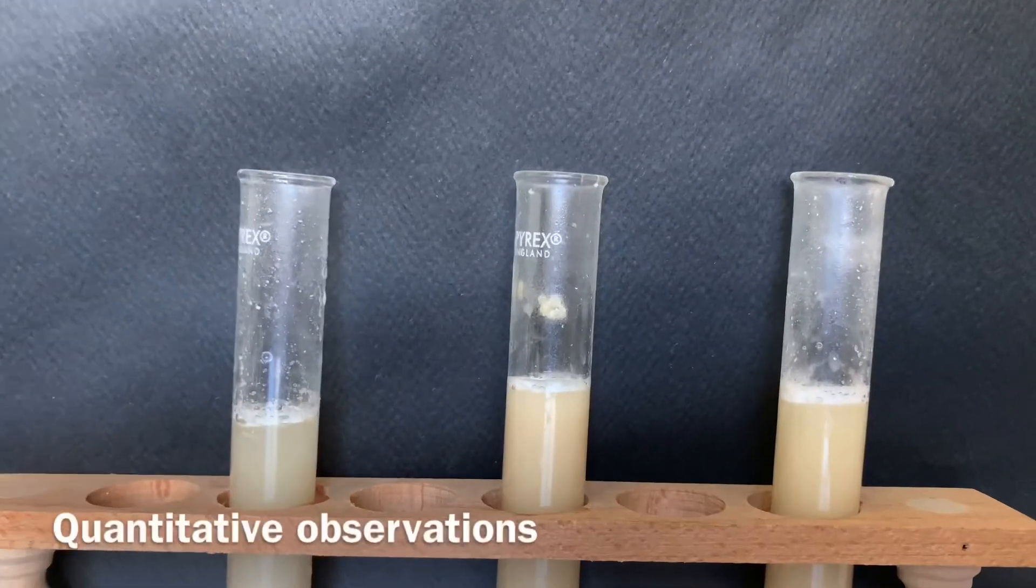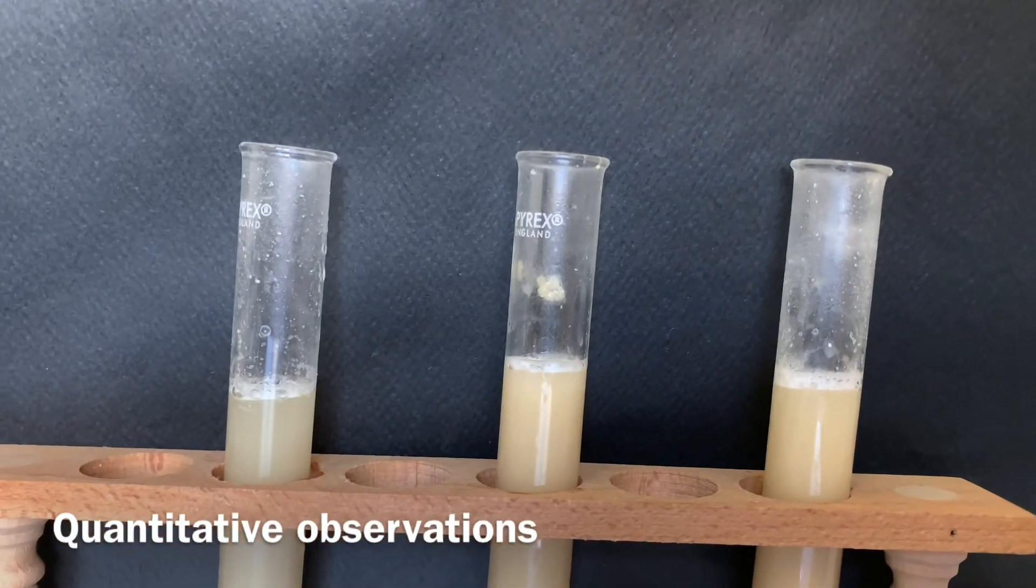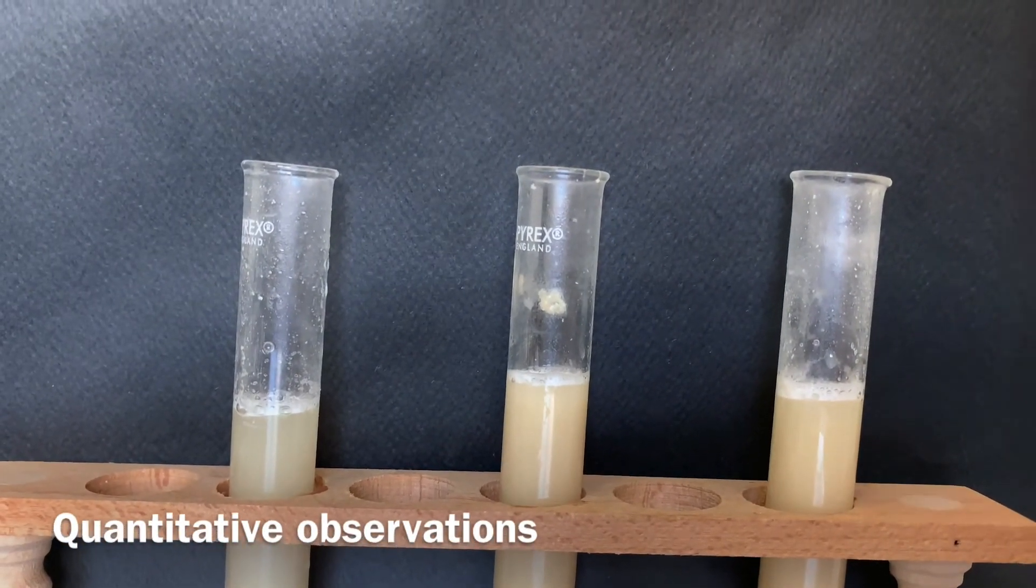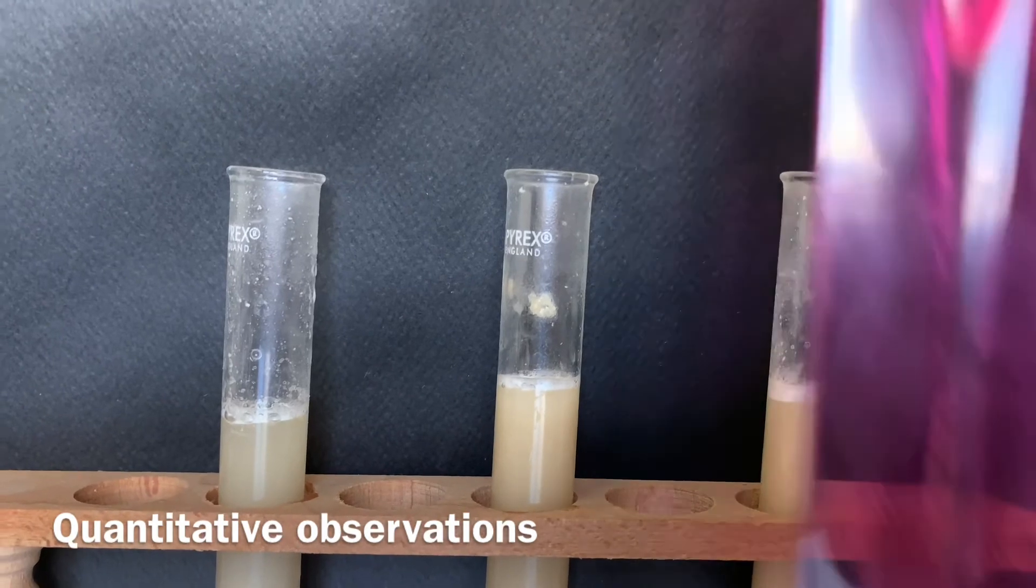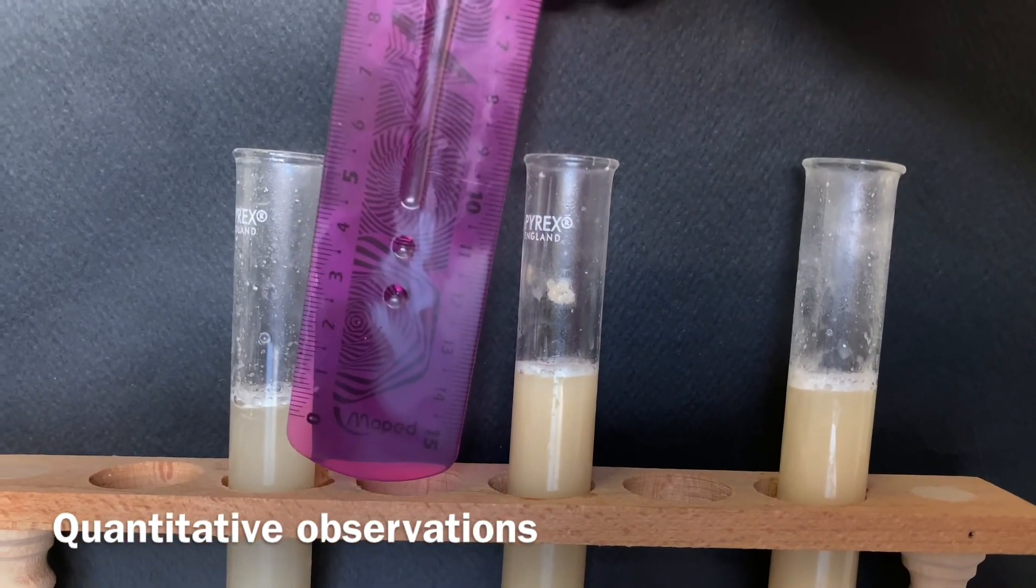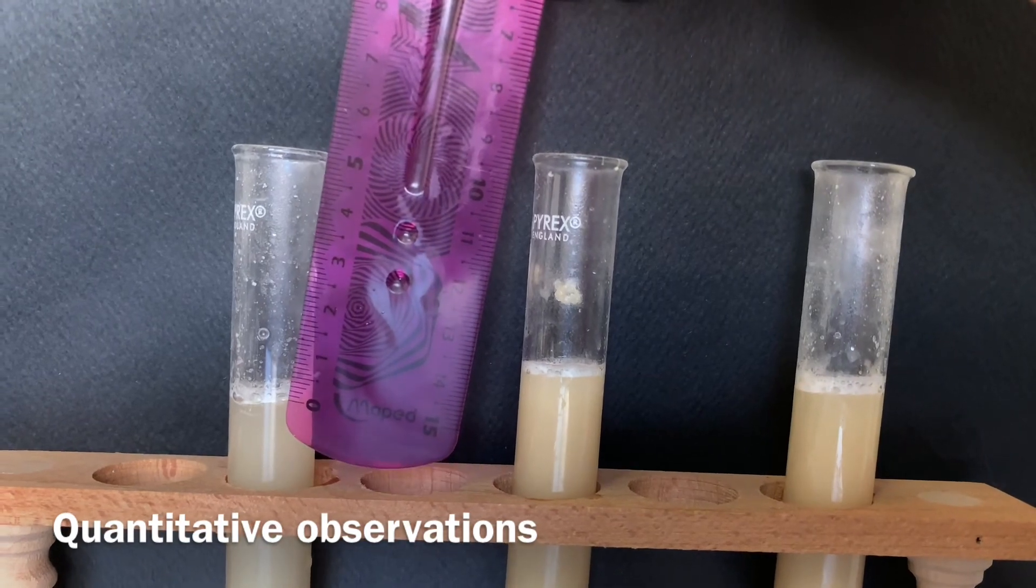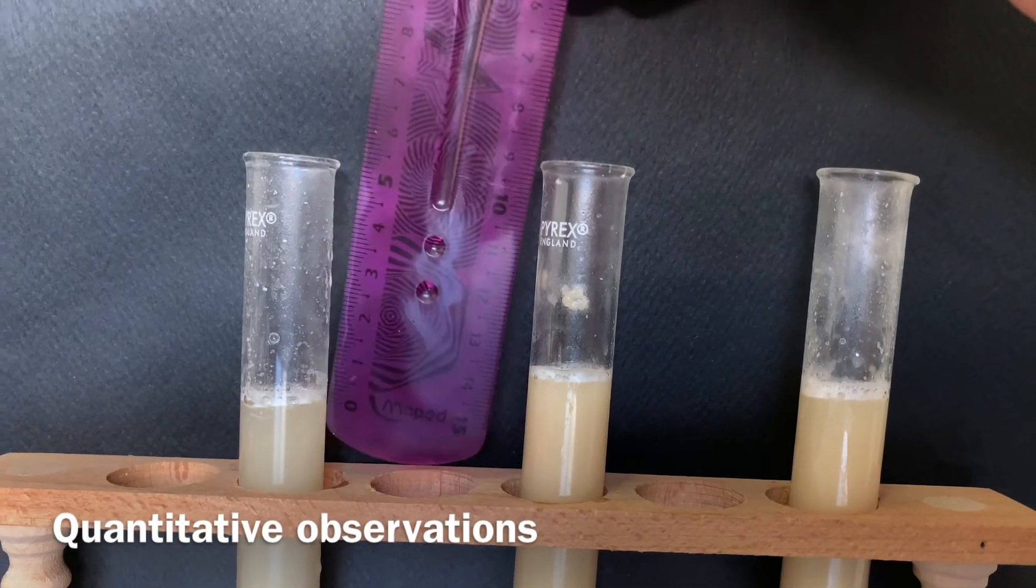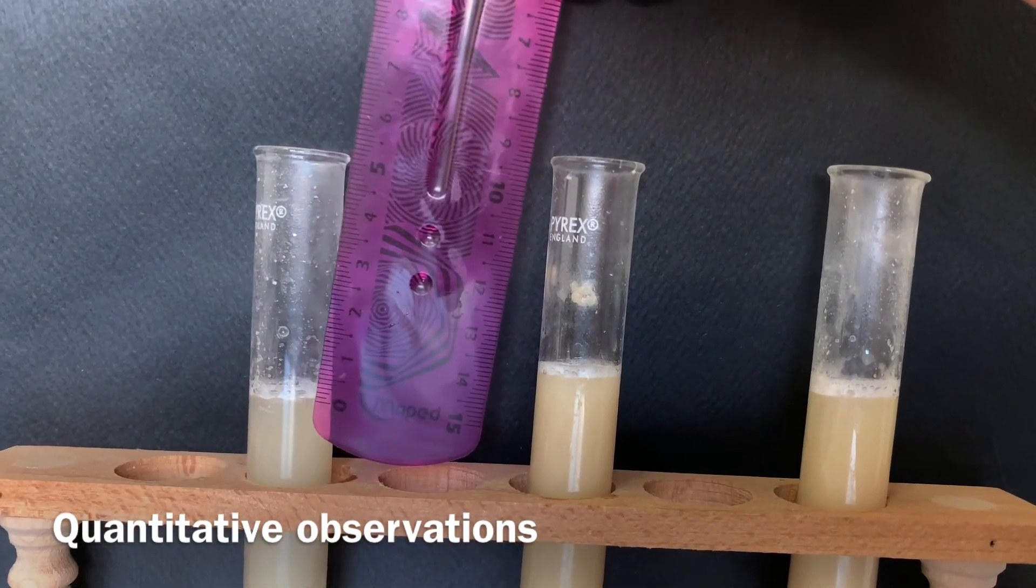In addition to collecting qualitative observations, I'm also going to be collecting quantitative observations by measuring the depth of the bubbles that were produced in each test tube. In the first test tube, there is around 0.2 centimeters of bubbles produced.